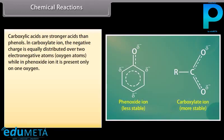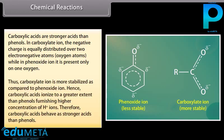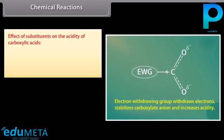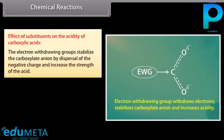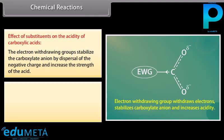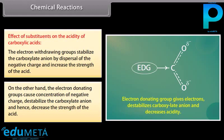Carboxylic acids are stronger acids than phenols. In the carboxylate ion, the negative charge is equally distributed over two electronegative oxygen atoms, while in phenoxide ion it is present only on one oxygen. Thus, the carboxylate ion is more stabilized compared to the phenoxide ion. Hence, carboxylic acids ionize to a greater extent than phenols, furnishing a higher concentration of hydrogen ions. Therefore, carboxylic acids behave as stronger acids than phenols. The electron-withdrawing groups stabilize the carboxylate ion by dispersal of negative charge and increase acid strength, while electron-donating groups destabilize the carboxylate anion and decrease acid strength.